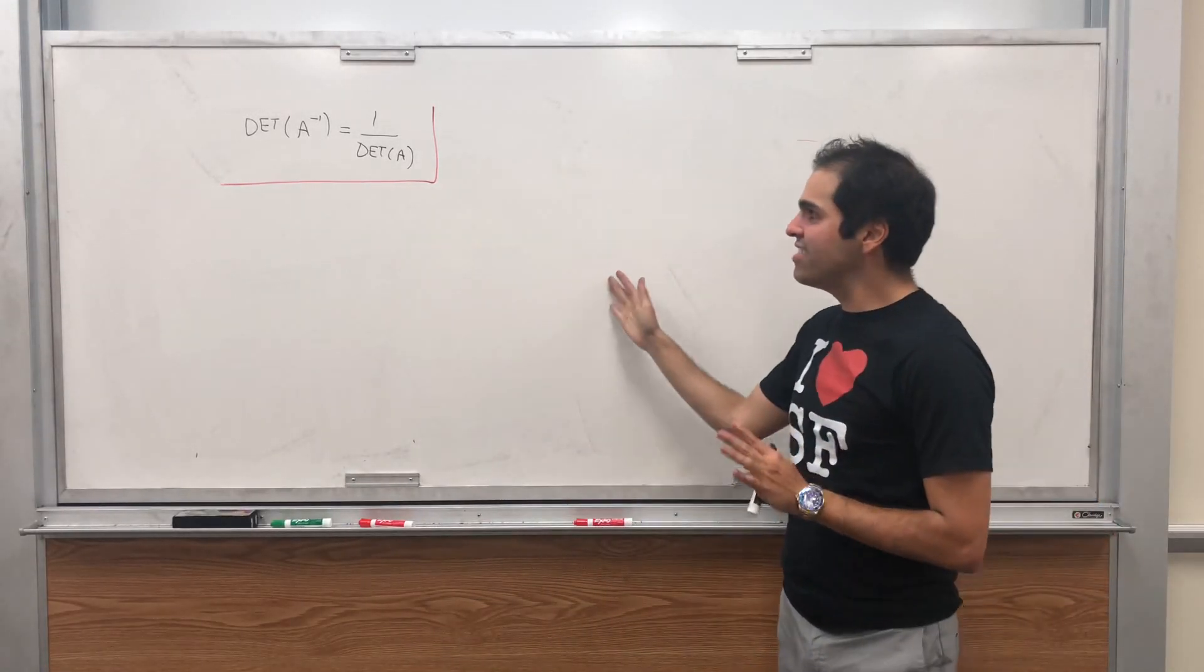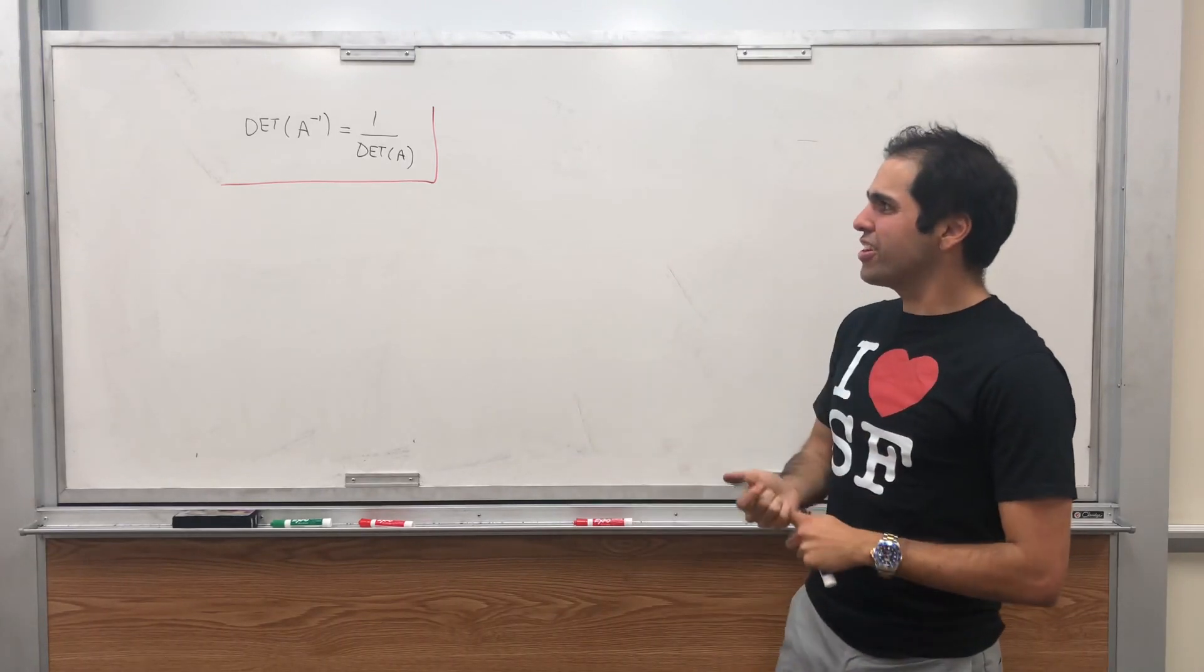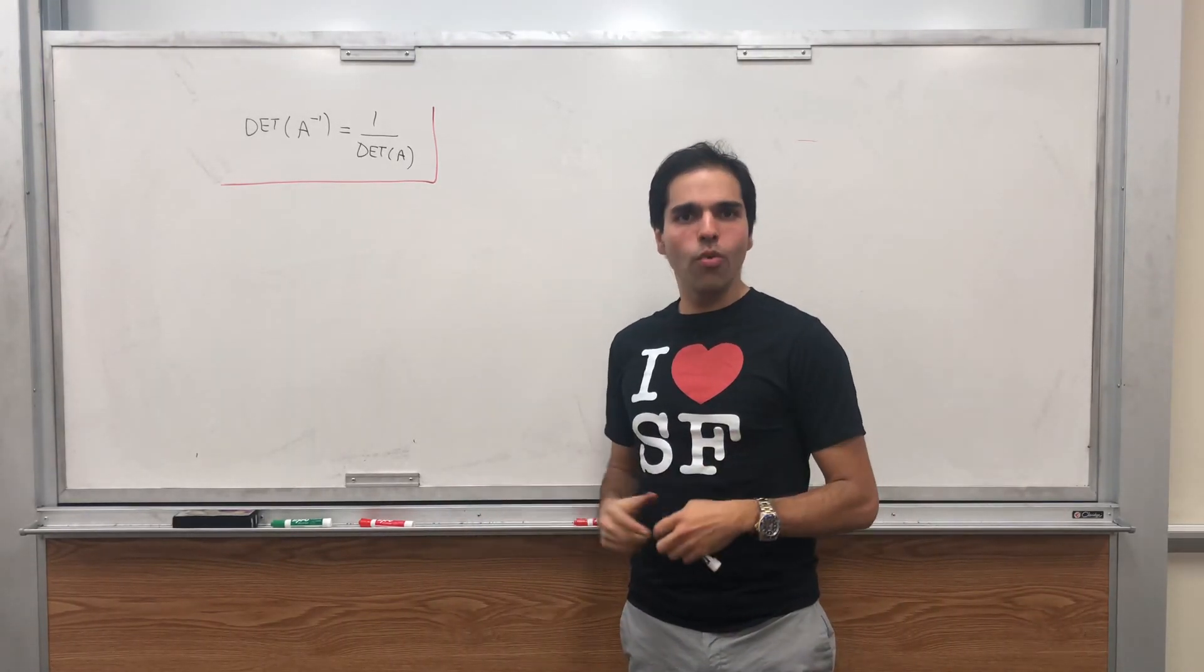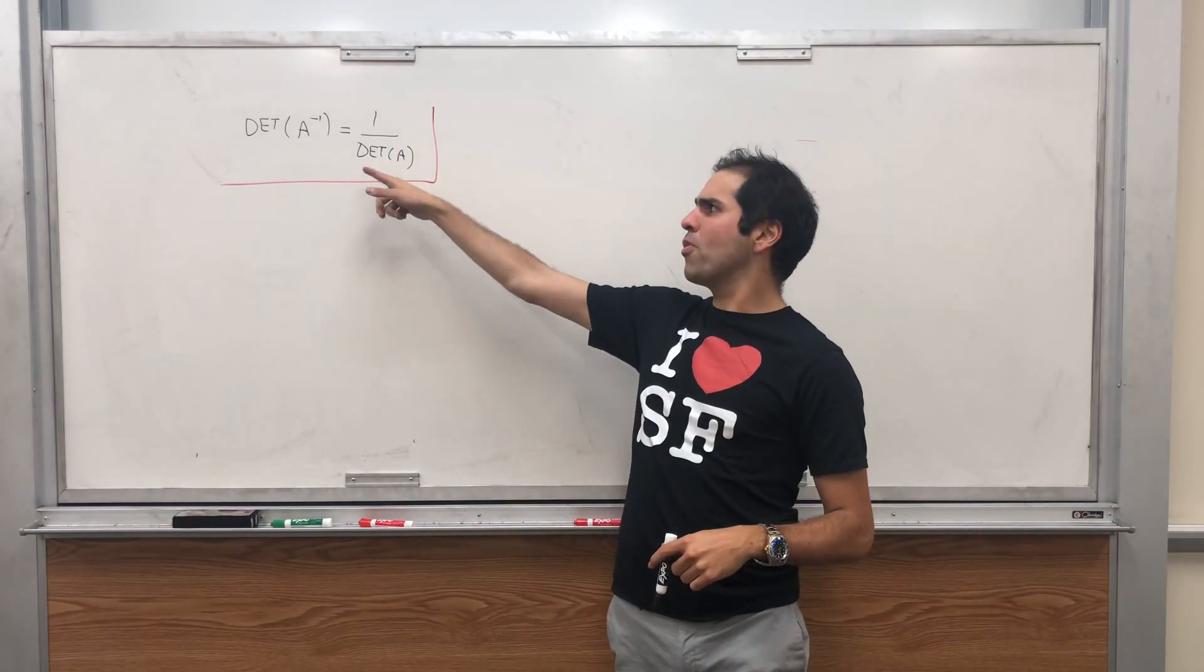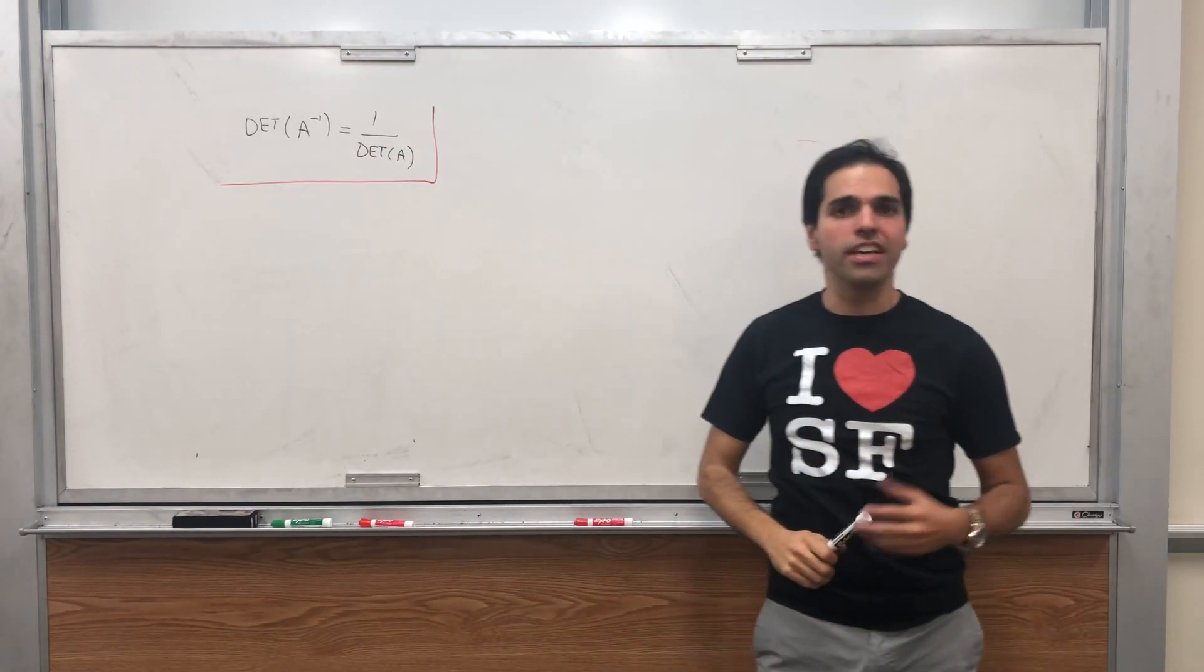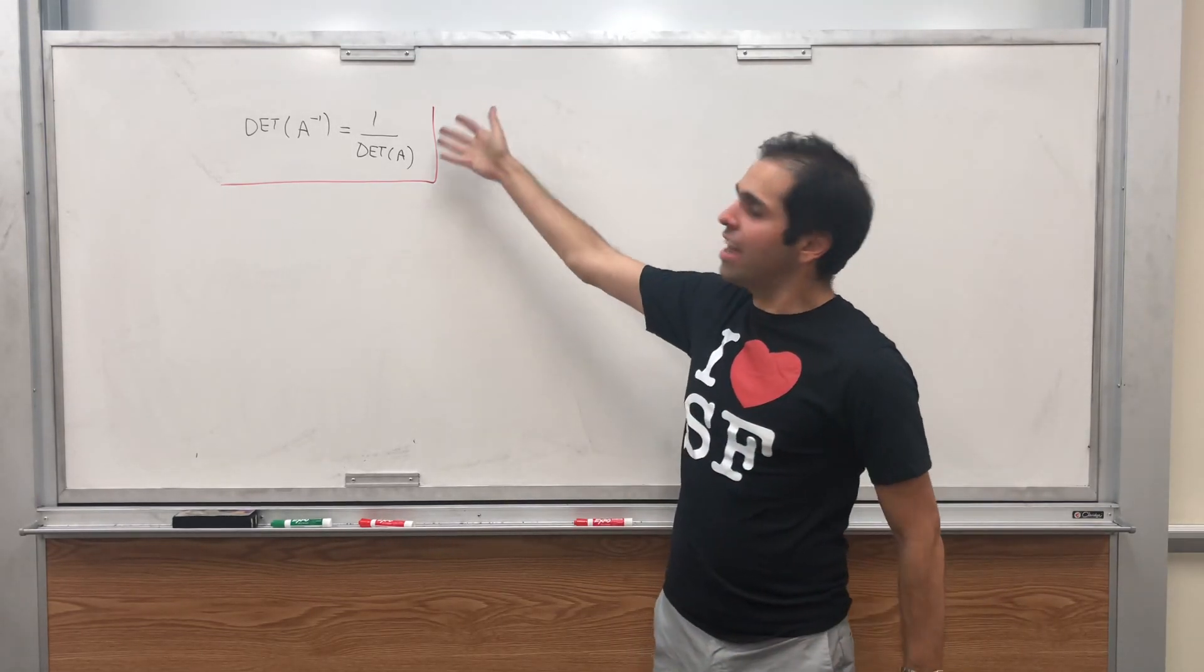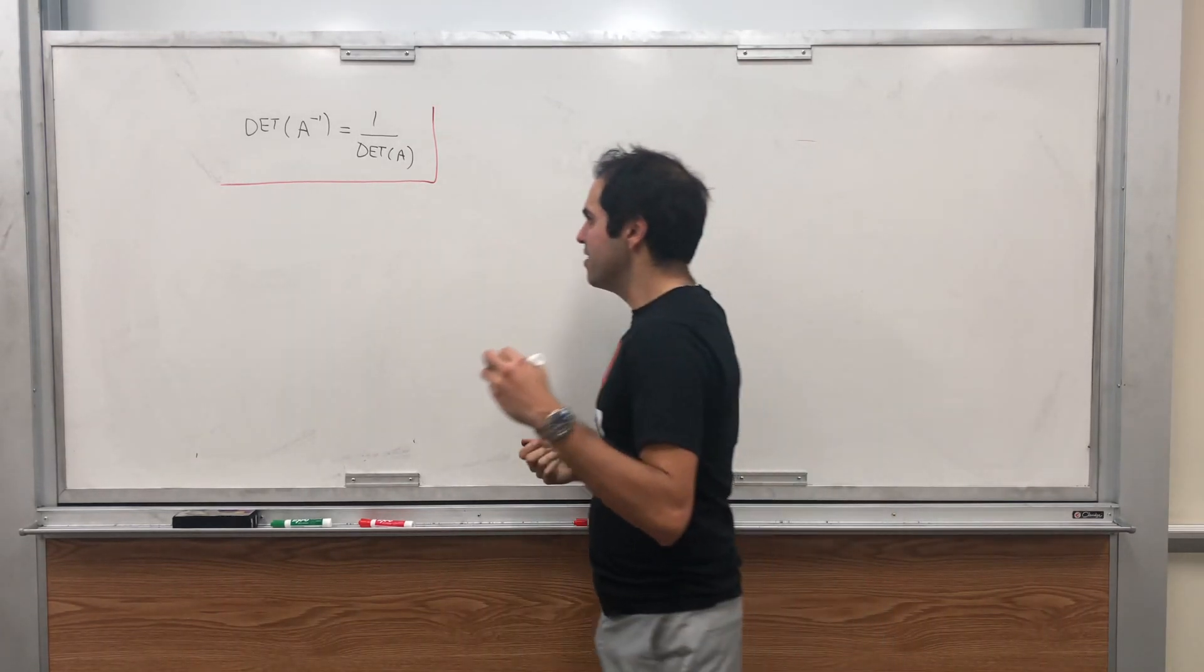Thanks for watching. In today's video, I want to kill two birds with one stone. First of all, I want to show that A is invertible if and only if its determinant is non-zero, and furthermore, to get this nice identity that the determinant of the inverse of A is 1 over the determinant of A, which is another nice suggestion that A inverse is like 1 over A.